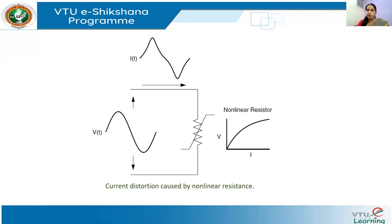In this figure, a perfectly sinusoidal voltage V is applied to a non-linear resistor, where the voltage-current relationship is not proportional — the current increases exponentially with voltage. When we apply this perfect sine wave V(t) to the non-linear resistor, the resulting current waveform is no longer a sine wave; it is a non-sinusoidal or distorted current caused by the non-linear resistance.